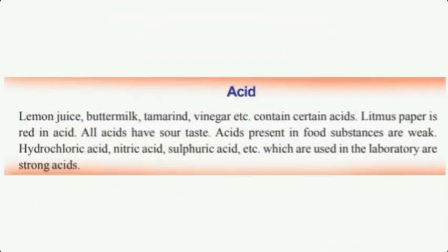What is acid? Lemon juice, buttermilk, tamarind, vinegar, etc. are certain acids. Litmus paper turns red in acid. All acids have a sour taste. Acids present in food substances are weak. Hydrochloric acid, nitric acid, and sulfuric acid are used in the laboratory as strong acids.